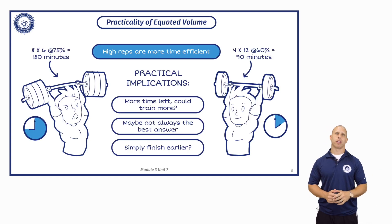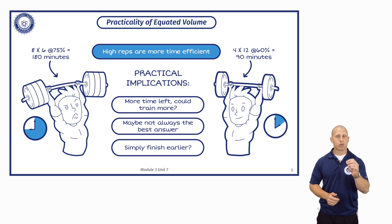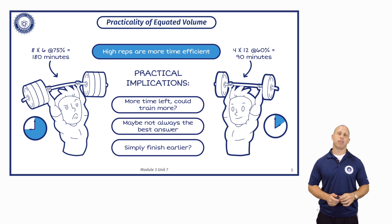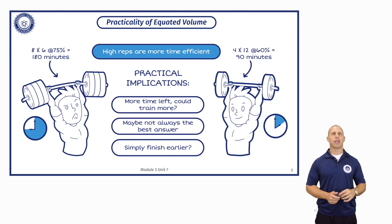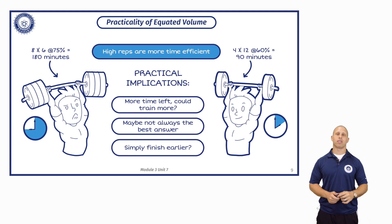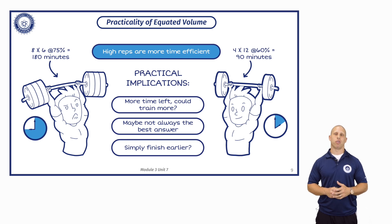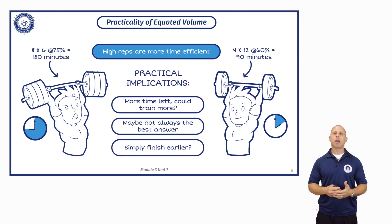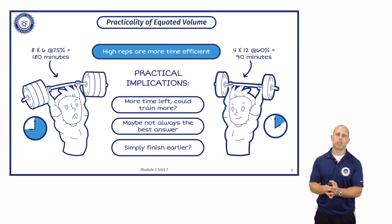But there are practical implications to discuss — high reps are more time efficient. The group that did the 6-4-2 undulation had to do eight sets on the six-rep day, nine sets on the four-rep day, and ten sets on the two-rep day, which took an average of 180 minutes per training session for just the squat and bench, with mandatory five to seven minute rest intervals. In contrast, the high repetition group doing 12, 10, and 8 reps had four sets on the 12-rep day, four sets on the 10-rep day, and five sets on the 8-rep day — taking only 90 minutes, half the time. I would certainly rather achieve the volume threshold I need in half the time if the purpose is hypertrophy.